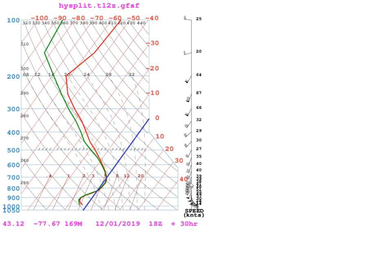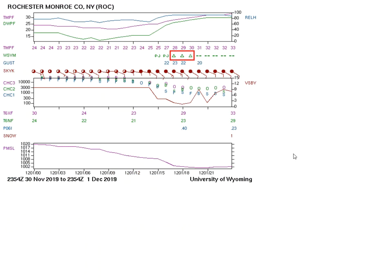Here's the GFS forecast sounding for Rochester, valid at 18z from the 12z run the previous day, and I've highlighted the zero degree Celsius isotherm in blue. The GFS predicted a rather deep melting layer — temperatures were slightly above zero from near 700 millibars down to just below 800 millibars, while the layer from around 825 millibars down to the surface was below zero degrees Celsius. That thick cold layer would allow snowflakes that had melted in the warm layer to completely refreeze before striking the ground. Forecasters could have concluded that the GFS favored sleet in Rochester at 18z, and observations showed that's what occurred. Precipitation actually started as freezing rain earlier in the day around 15z, but by 17z it had changed to sleet, which continued for a few hours.